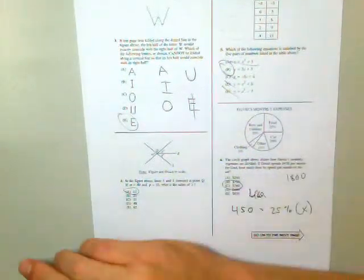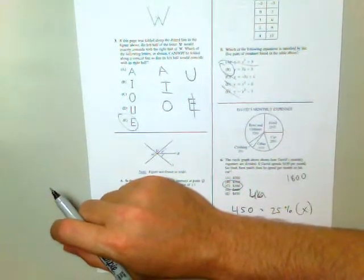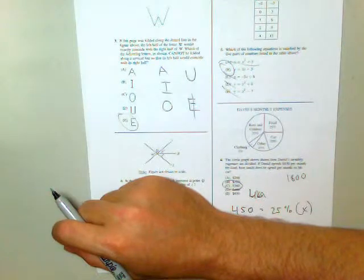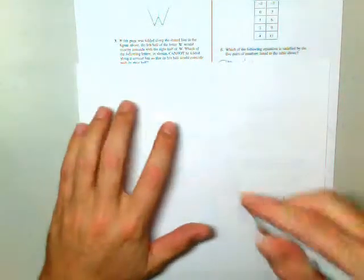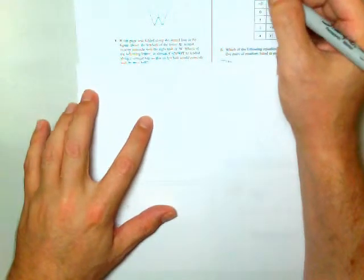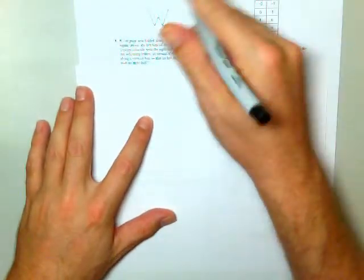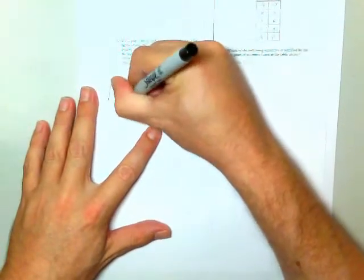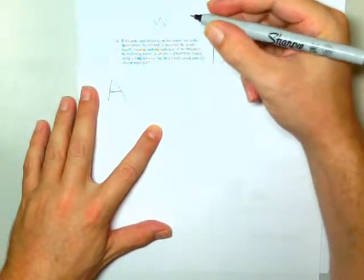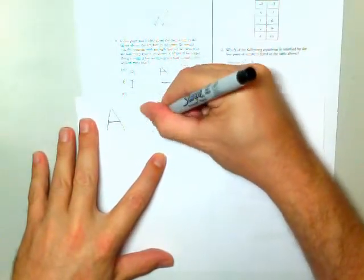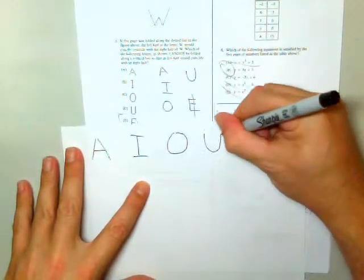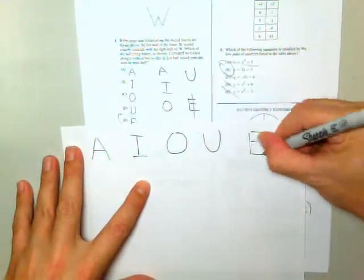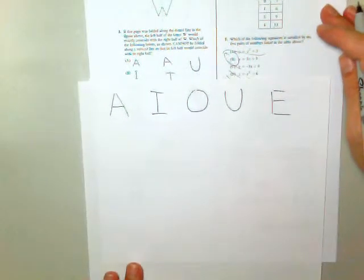Number 3 says, if this page were folded along the dotted line in the figure above, the left half of the letter W would exactly coincide with the right half. Which of the following letters, as shown, cannot be folded along a vertical line so that its left half would coincide with its right half? Well, I'm not sure that they did us any favors by not giving us the term. In this case, the term is vertical symmetry. And they've taken capital vowels: A, I, O, U, and E.